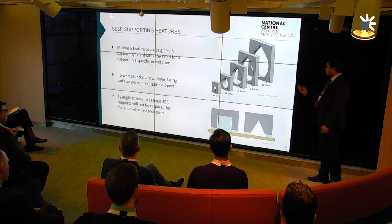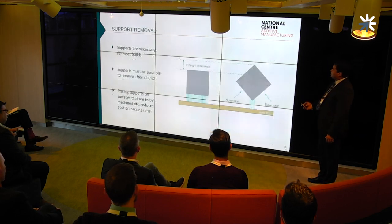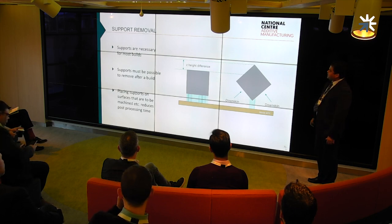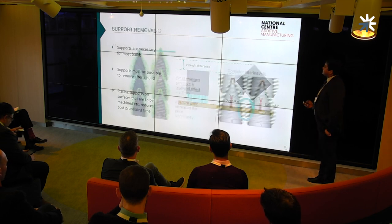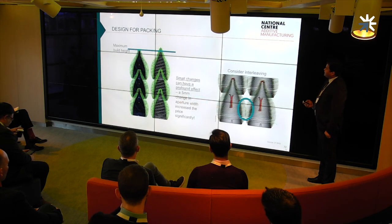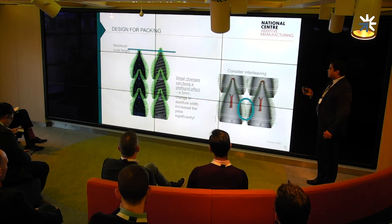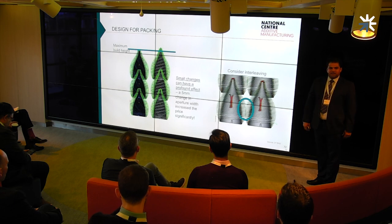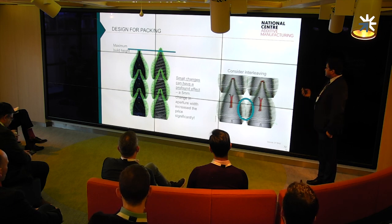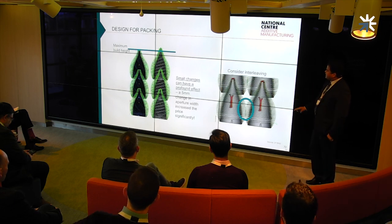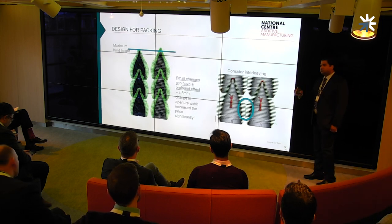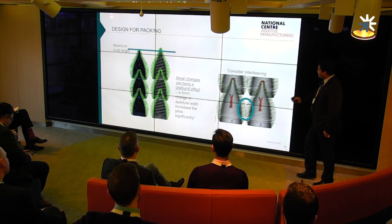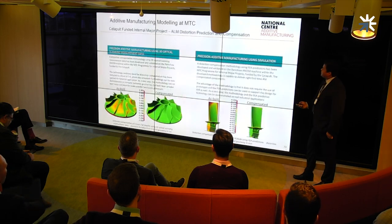There are simple changes we make to prepare our files. Support removal — think about how to remove it and place supports smartly rather than fully supporting everything. For cost, think about how many parts you can make quickly. We can nest parts more nicely, though this is only applicable for electron beam melting, where we can nest parts to get more of them per build.